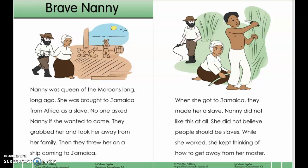Nanny was a queen of the Maroons. Long, long ago, she was brought to Jamaica from Africa as a slave. No one asked Nanny if she wanted to come. They grabbed her and took her away from her family. Then they threw her on a ship coming to Jamaica.